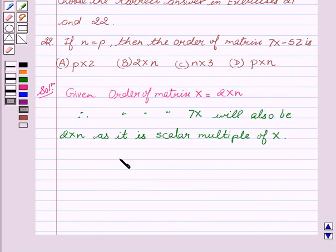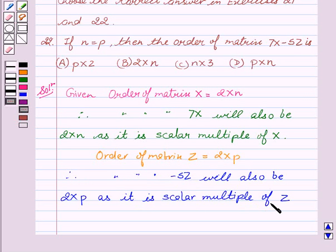Now, order of matrix Z equal to 2 cross p. Therefore, order of matrix minus 5Z will also be 2 cross p as it is scalar multiple of Z.